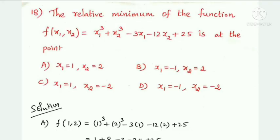Next question: the relative minimum of the function f(x1, x2) equal to x1 cubed plus x2 cubed minus 3x1 minus 12x2 plus 25. Check each option by substituting the x1 and x2 values into the function to determine which gives the minimum.